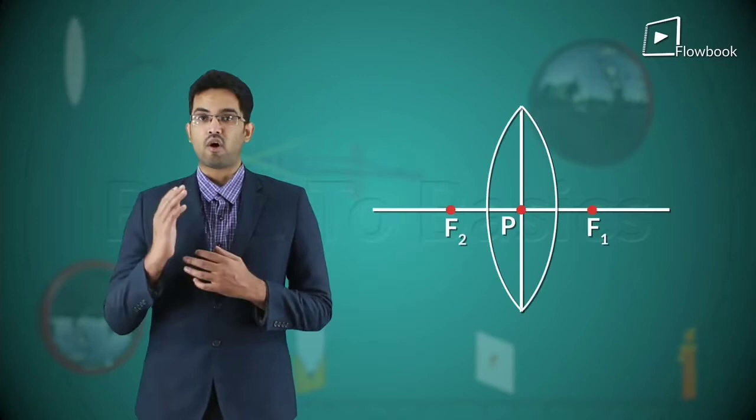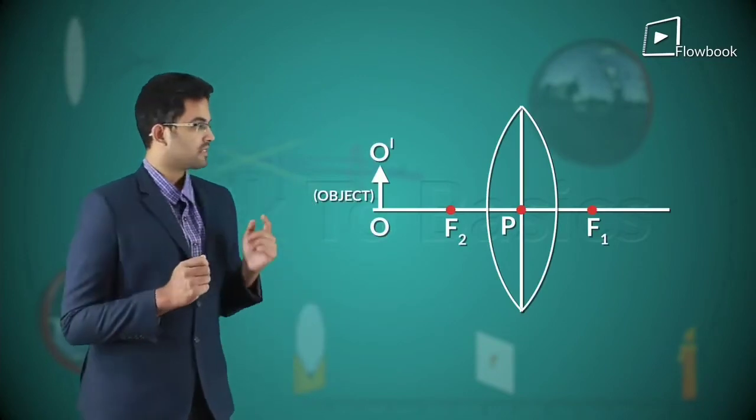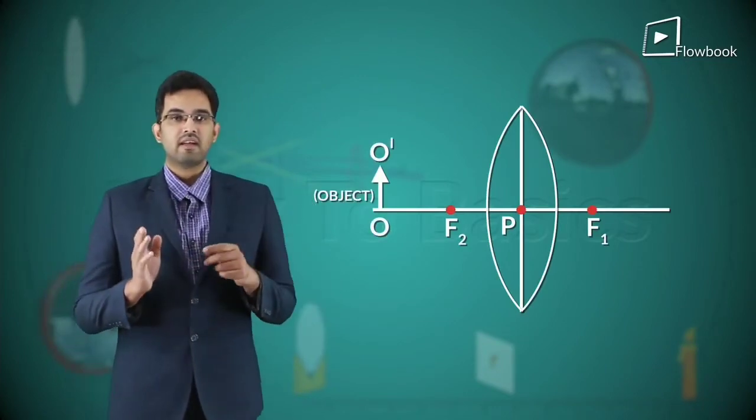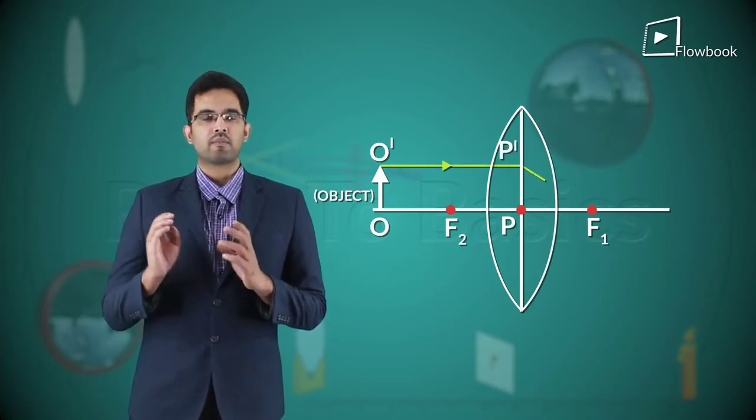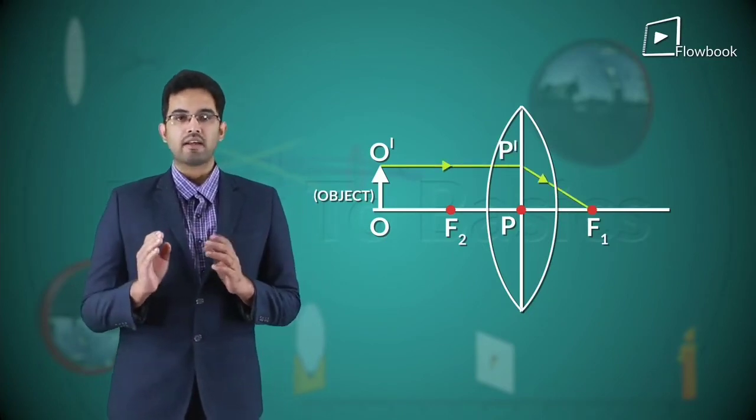Let's take a convex lens with an object O' placed here. The ray starting from O' parallel to the principal axis will pass through the principal focus F on the other side.